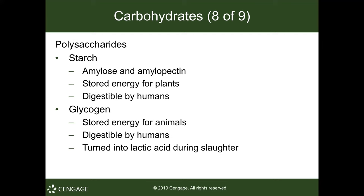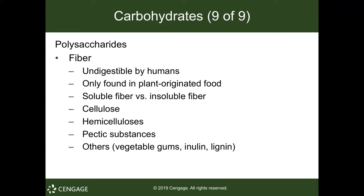Among polysaccharides, starch is digestible and glycogen is the stored form of carbohydrate energy in animals and people, found in muscles and the liver. Fiber is undigestible and is only plant-based — there is no source of animal fiber.